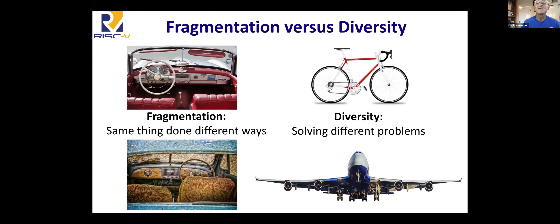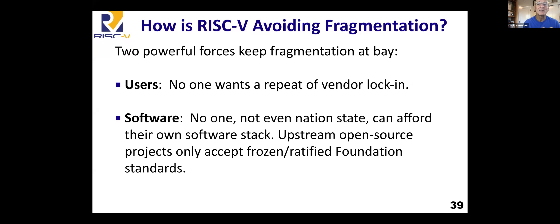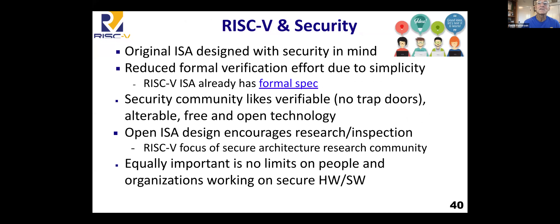Let me talk about fragmentation versus diversity. People worry about fragmentation. Well, it's like complaining that the world has some left-wheel drive cars and some right-wheel drive — we should have picked one, but there was no standardization. But diversity is useful — both of those vehicles have wheels, but they're specialized for good reasons. How we're avoiding fragmentation: no one wants to get locked in, and nobody can do software by themselves. If you want to keep the software up to date, you have to upstream the open source. So software is forcing fragmentation not to happen.